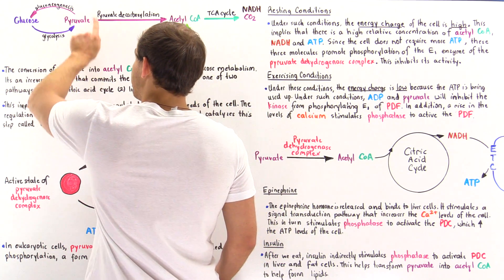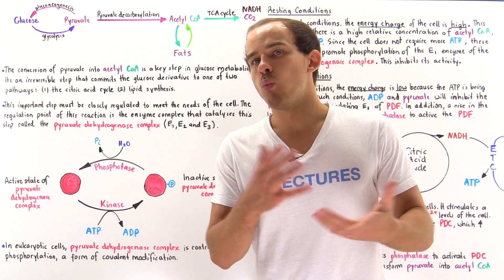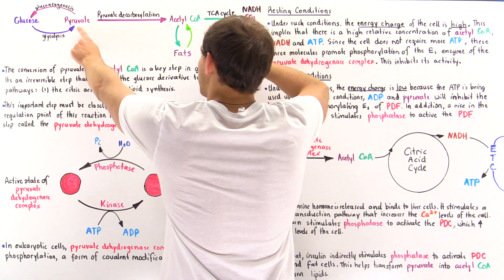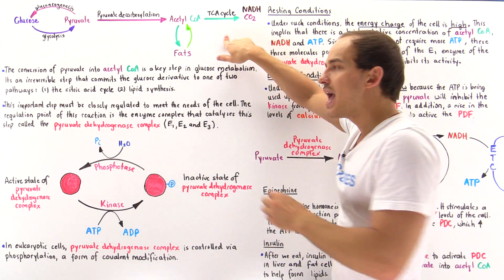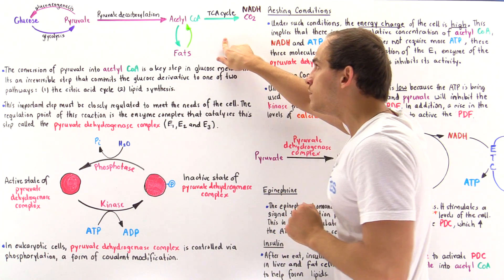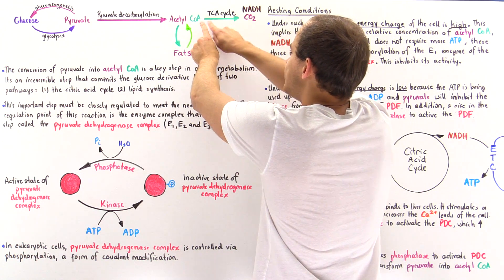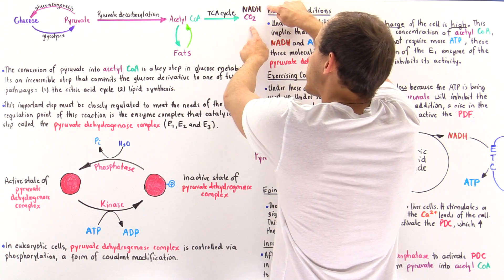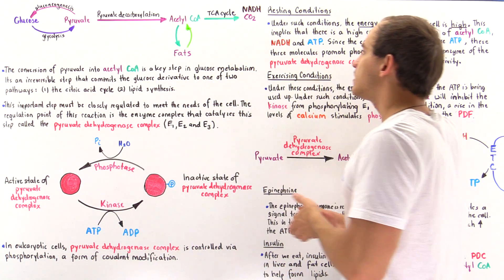Under certain circumstances, the pyruvate can even be transformed back into glucose. Now, if we have plenty of oxygen in our cell and our cell wants to produce ATP molecules, the pyruvate will enter the matrix of the mitochondria. In the matrix, the pyruvate will be transformed via an irreversible step into acetyl-coenzyme A. This step commits the acetyl-coenzyme A — the derivative of pyruvate — into one of two different pathways: either the TCA cycle (the citric acid cycle, also known as the tricarboxylic acid cycle) to generate NADH and FADH2 molecules and ultimately form ATP via the electron transport chain.